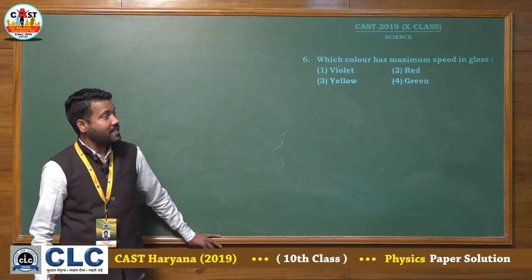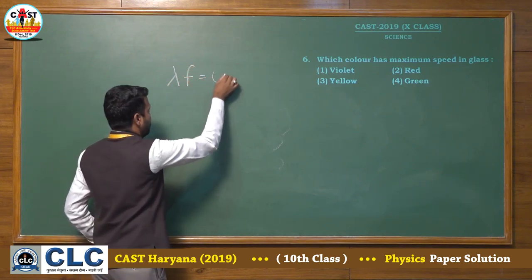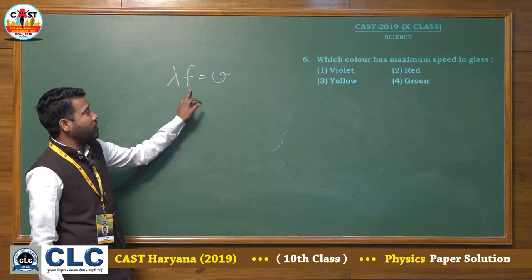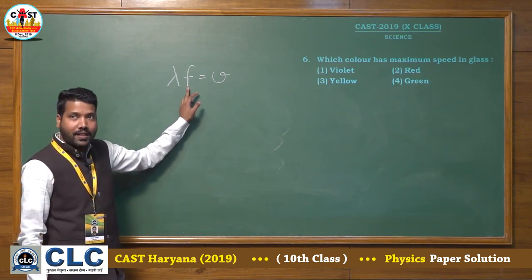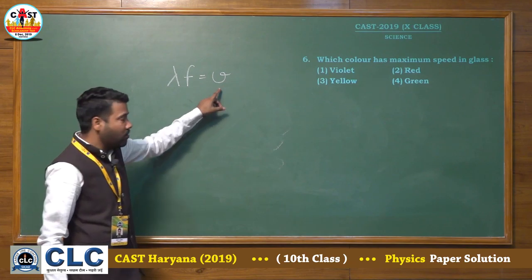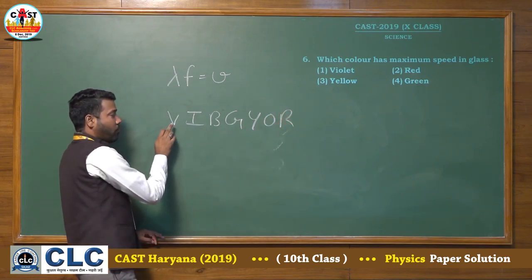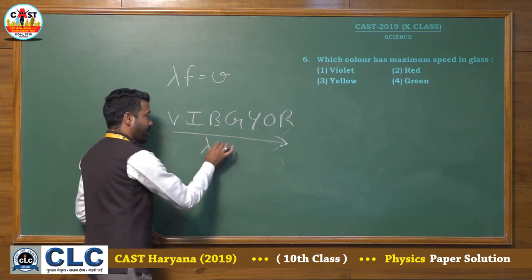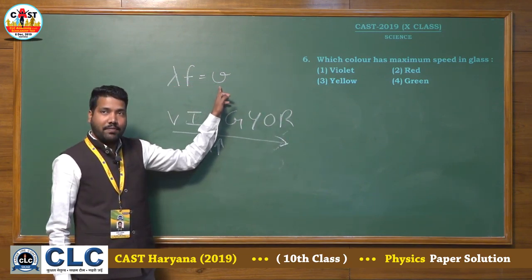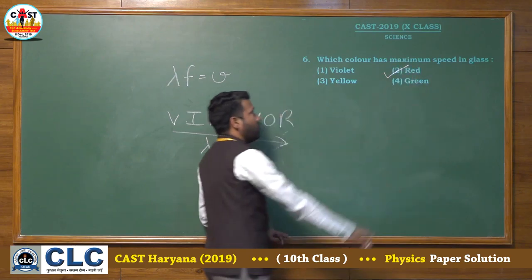Sixth question: which color has maximum speed in glass? We know the relation: wavelength × frequency = wave velocity. Light is a transverse wave. Frequency is a function of the source and remains constant. So the color with the greater wavelength will have greater velocity. As we go from violet to red, wavelength increases. Maximum wavelength corresponds to red color, so red color has the maximum speed in glass. The right answer is the second option.